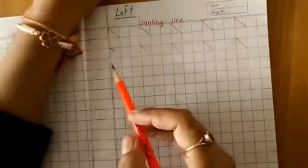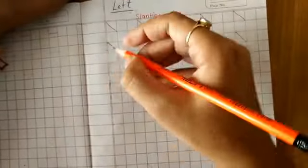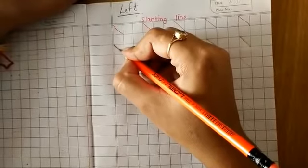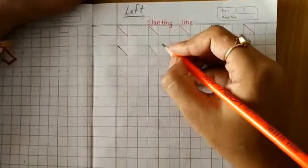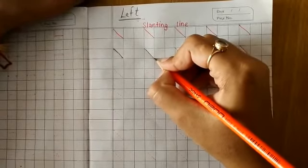How to draw? See, here some dots. Trace dots from top to bottom. It's called slanting line. Trace dots from top to bottom.